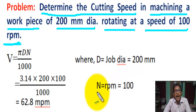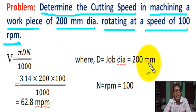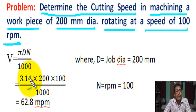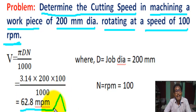Given: diameter of the job D = 200 mm, and RPM of the workpiece N = 100 RPM. Putting these values: V = π × 200 × 100 / 1000 = 3.14 × 200 × 100 / 1000 = 62.8 meters per minute. This is the answer.